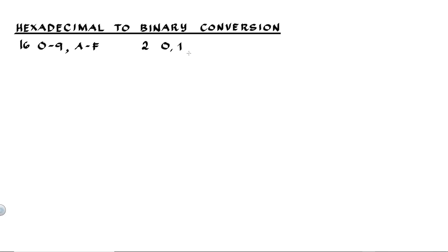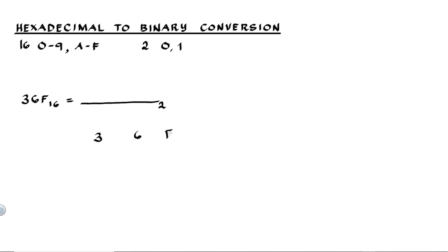For our conversion, let's say we have 36F hex and convert it to binary. The first thing we do is write 36F, giving each character enough space.